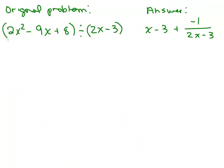All right. So here was our original problem. 2x squared minus 9x plus 8 divided by 2x minus 3, and it looks like our answer should be x minus 3 plus negative 1 over 2x minus 3. So how would you check it? We take what we divided by 2x minus 3 times the x minus 3 and then add the remainder.